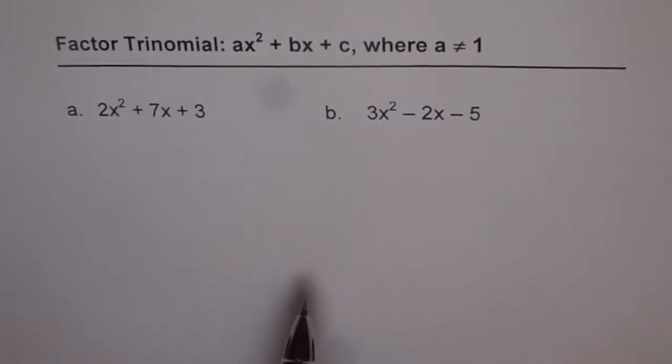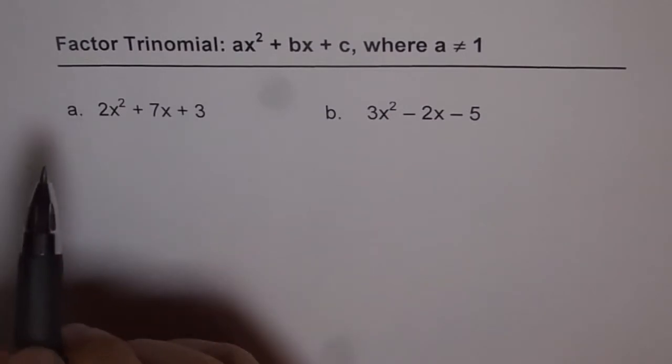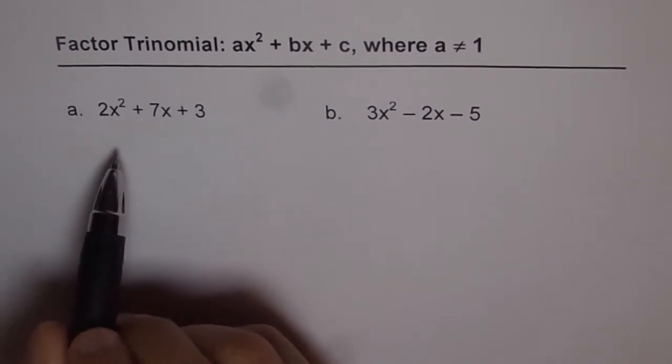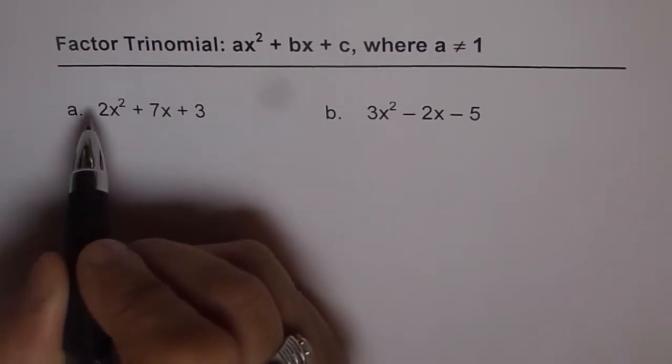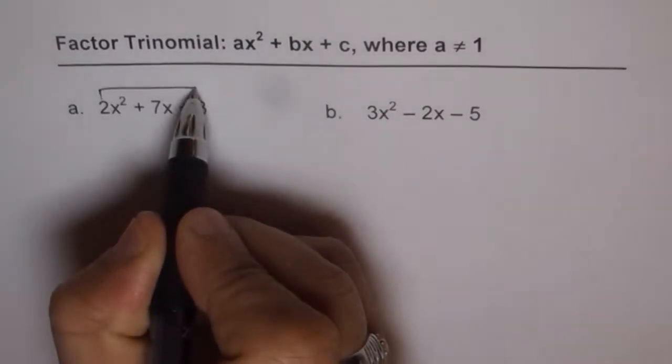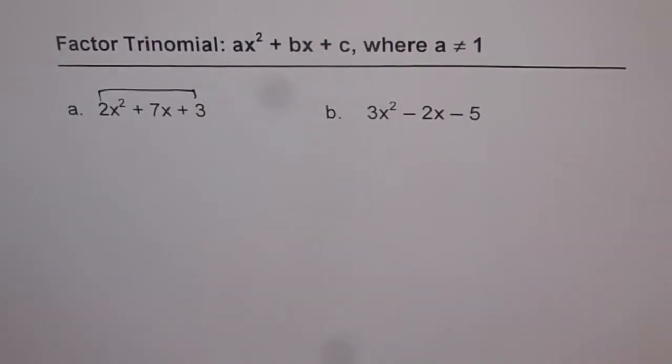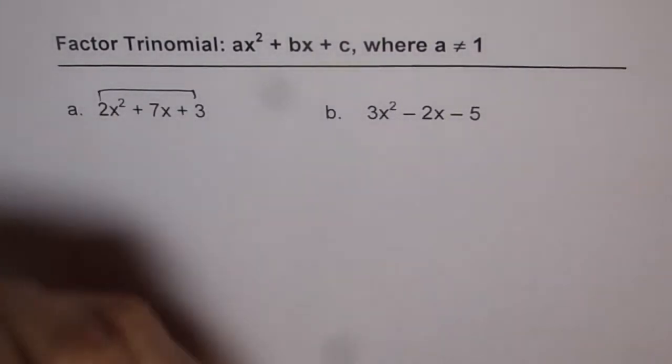Now let's see how to factor them. The strategy remains the same. We are trying to find two numbers p and q whose product is now a times c. That means 2 times 3. So we are looking for two numbers whose product is 2 times 3, that is 6.